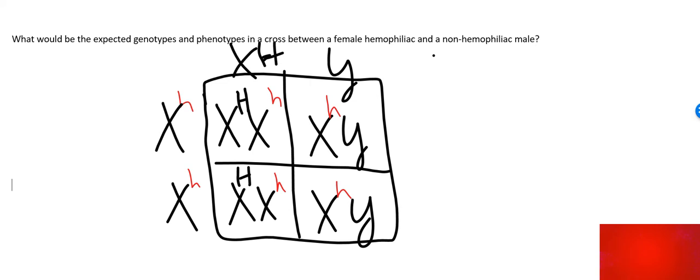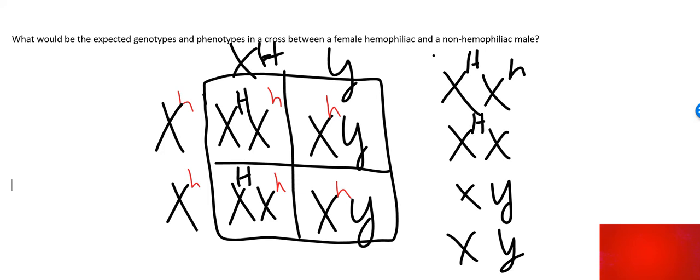For our ending genotypes and phenotypes, let's write these out: XY, XY. So we have X^H X^h. For the girls, 100% are carriers.